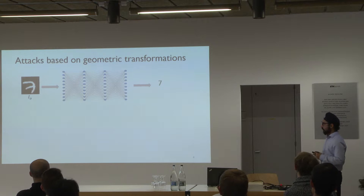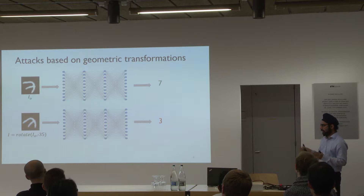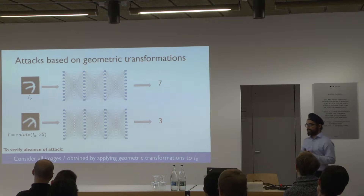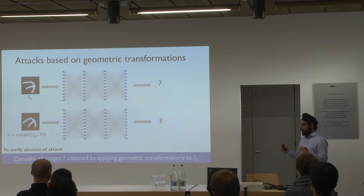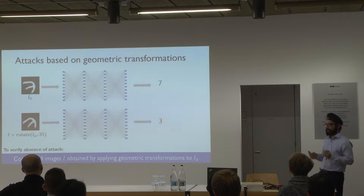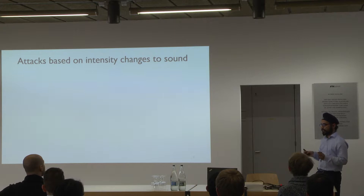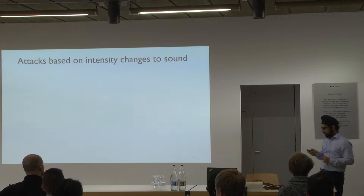For geometric attacks, a network classifying a test image correctly might misclassify it after rotating by minus 35 degrees — saying the image is 3 even though it looks like 7 to a human. So you define a region by specifying rotation parameters — for example, asking whether all images obtained by rotating from minus 35 to plus 35 degrees are classified as 7. An important point is that this is local robustness, not global robustness: you verify by taking an image from the test set and defining a region around it, not verifying all images that look like 7 in the world.